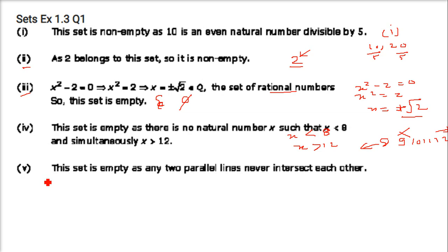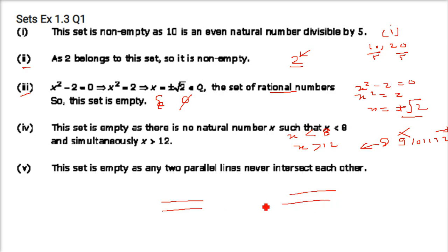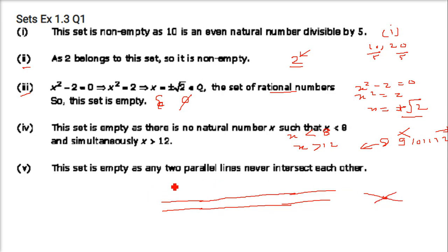Next: x is a point common to any two parallel lines. Think of railway tracks — they never meet, they never have any intersection point. So this set will not have anything in it, making it an empty set.